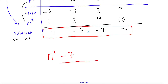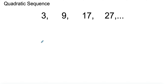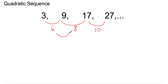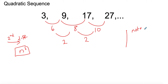Now what if the subtraction row is not constant? Let's look at the sequence 3, 9, 17, 27. Take the first differences, then the second differences — we get 2. So 2 divided by 2 is 1, giving us n squared as the first part of the formula. Note: if your second difference were 1, you'd still divide by 2 to get a coefficient of one-half, or 0.5.